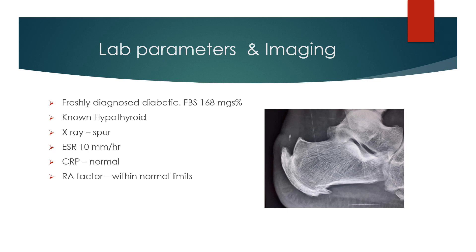She was a known hypothyroid patient and was freshly diagnosed to be diabetic with a fasting blood glucose of 168 mg%. The X-ray showed a calcaneal spur and calcific insertional tendinopathy, probably indicative of Haglund's deformity. ESR was normal, CRP was normal, and rheumatoid factor was within normal limits. These tests are necessary to rule out spondyloarthropathy, which can also cause heel and tendon pain.